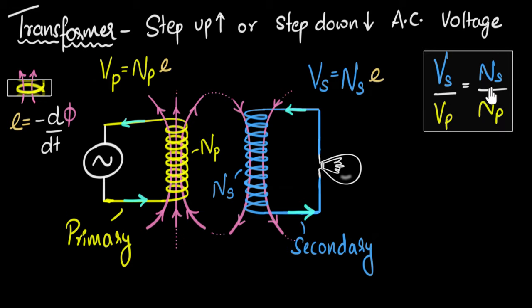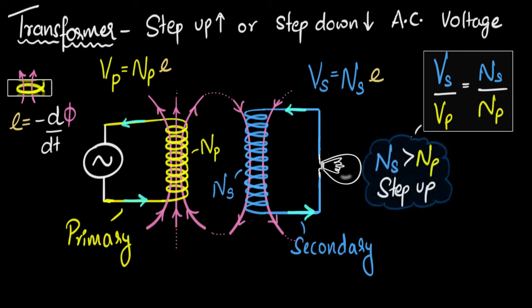This means that if the number of turns in the secondary is more than the number of turns in the primary, like shown over here, then notice the voltage in the secondary would be higher than the voltage of the primary or the voltage of the supply. And we call this the step up transformer, increasing the voltage. That's what happens in your microwaves.